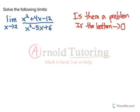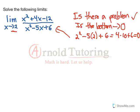So let's see if it does. Notice how x is going to 2 here. So if we were to put 2 in the bottom, we would get 2 squared minus 5 times 2 plus 6. And that equals 4 minus 10 plus 6, so that does equal 0. So yes, there is a problem.